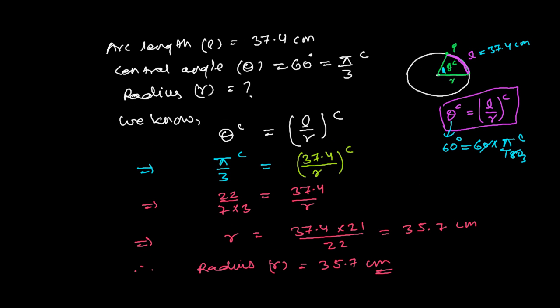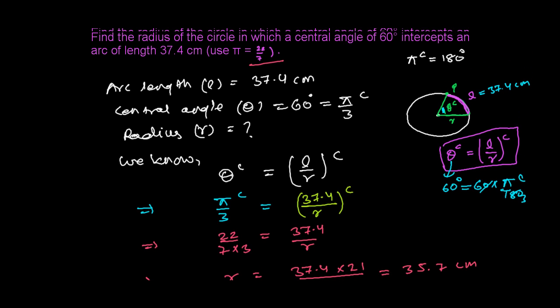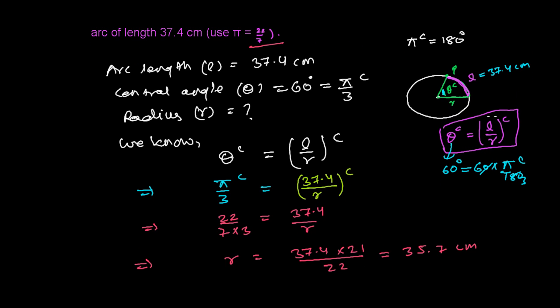This is how to find the radius, arc length, or angle using the formula θ in radians equals L/r. You'll encounter many similar questions involving circles. If you have questions, send them to me and I'll make videos that might help others. Catch you in the next video. Goodbye.